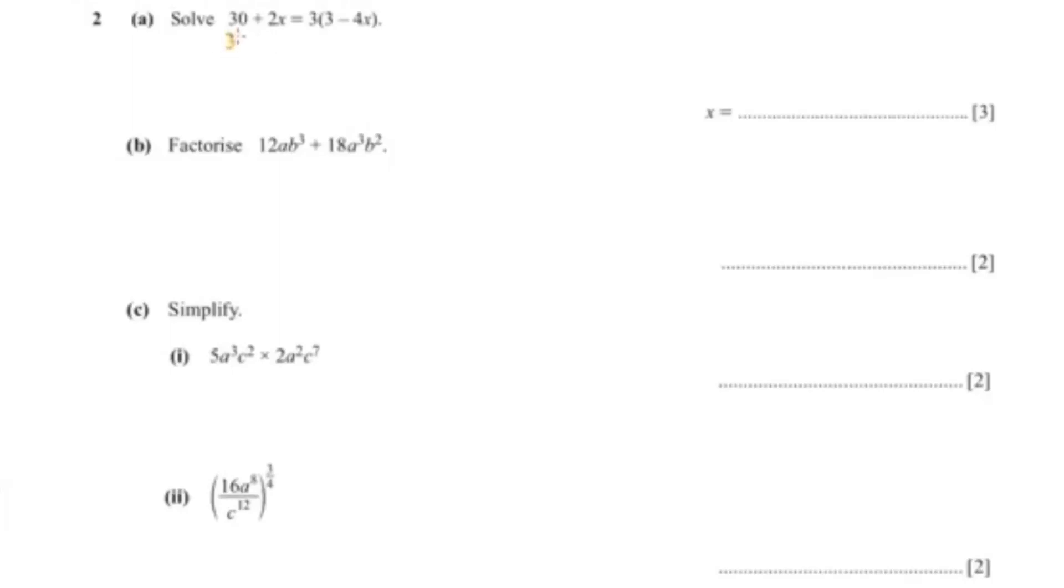This first question wants us to solve for x. I'm going to expand the bracket, so that is 9 minus 12x. Then I'm going to bring 4 to the other side and bring 2 to the other side.